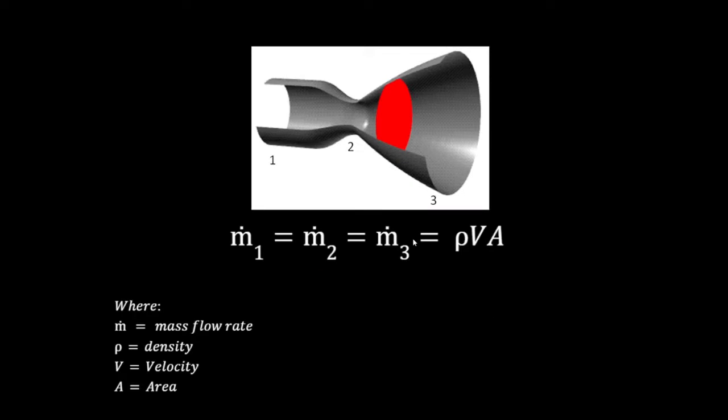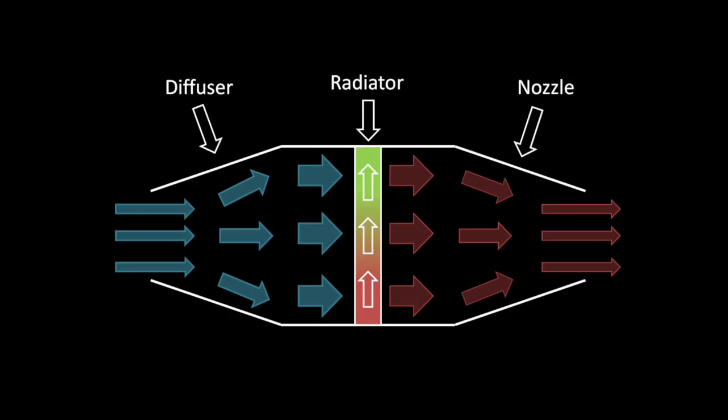As our ducting is a closed system we have the same amount of mass flow at any point. If we have any area changes we just change our velocity. So for example here at point 2 we have a smaller area so our velocity increases and the opposite is true of point 3. As our mass flow rate doesn't change no matter where we are in the system we can use this and Bernoulli's theorem to manipulate the amount of pressure we have on the inlet and the outlet side.